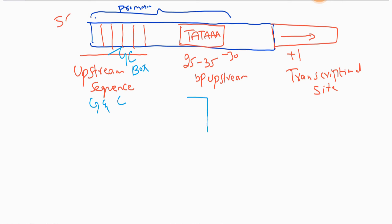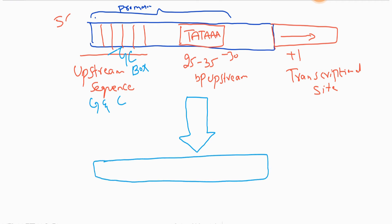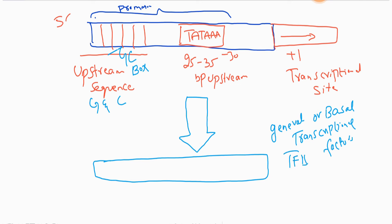To initiate transcription, RNA polymerase 2 also requires several other proteins or protein complexes. These protein complexes are known as general or basal transcriptional factors. With the help of these protein factors, RNA polymerase binds and starts the process of transcription, and these proteins are called TF2 — transcription factors for RNA polymerase 2.